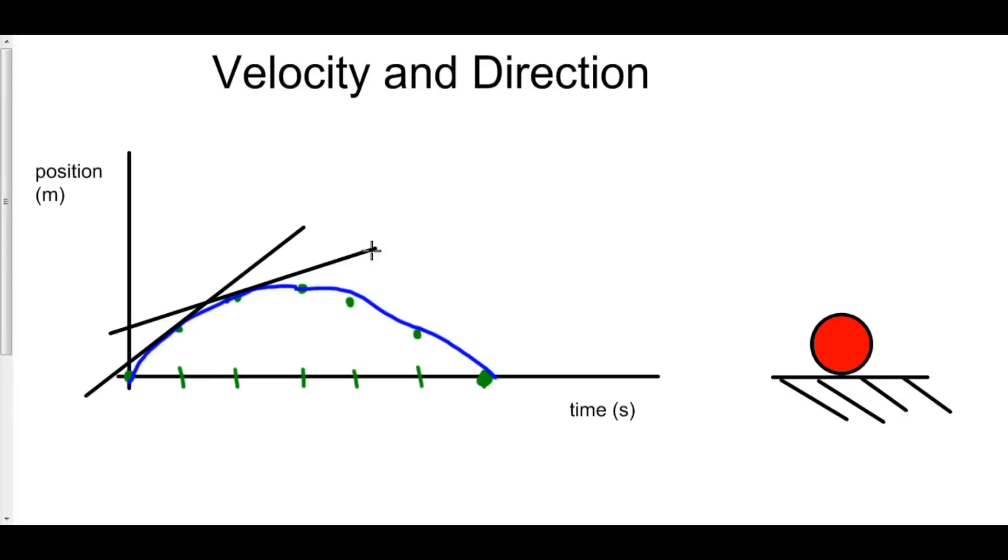And velocity is the derivative of position. So this slope right here represents the velocity of the ball at this particular moment. So what we can see happening is we can see that the ball starts off going much, much faster down here with its initial velocity.